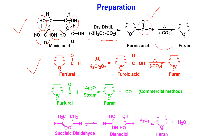In the second method, we start with furfural. When furfural is oxidized with a strong oxidizing agent, it is converted to furic acid, and furic acid upon decarboxylation is converted to furan. In the third method, when furfural and silver oxide are distilled together, furan is produced. This third method is the commercial method for the preparation of furan.